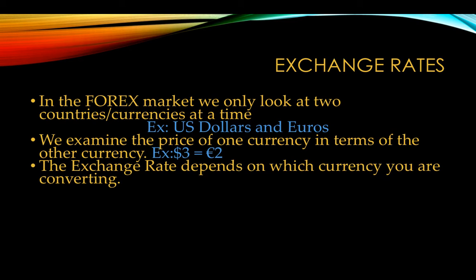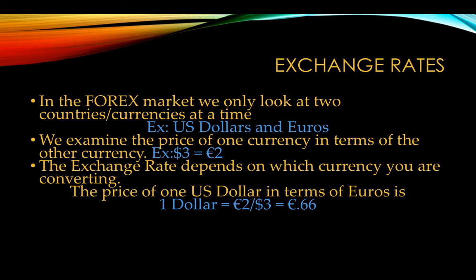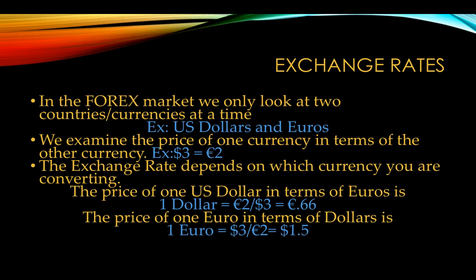So how do we figure out the exchange rate? It depends on which currency we're converting. If we're talking about the dollar and we want to know how many euros one dollar is worth, we take two euros, divide by three, and one dollar equals 66 cents of euros. And if we're doing it the opposite way — one euro in terms of dollars — we divide three by two, and one euro will get us one and a half dollars, or a dollar fifty.